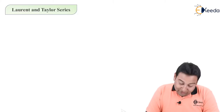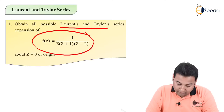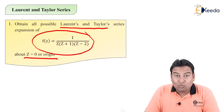Hello friends, in this video we'll be discussing one example on Laurent and Taylor series. This is our given problem: find all possible Laurent and Taylor series expansions for the given function about z equal to zero, the origin.